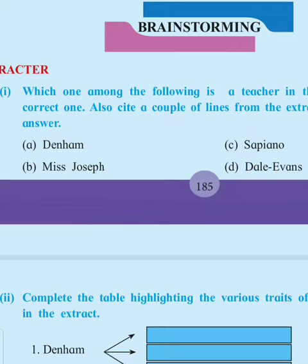Which lines support this? Denham and Miss Joseph, the two most senior students. There's also another line: Sapiano spoke of the study the class had made. And another information given: Denham and Miss Joseph led the others off the stage and the teachers took their seats.